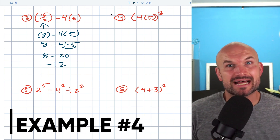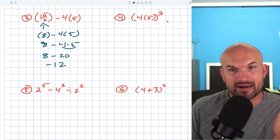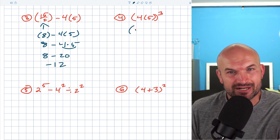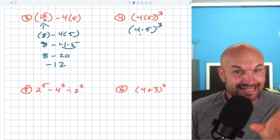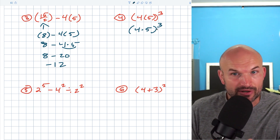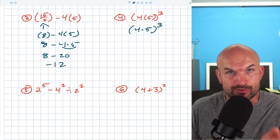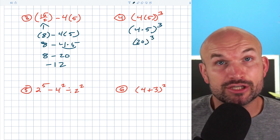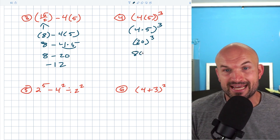In this next example, I have a parenthesis inside of parentheses. Whenever you're working with parentheses, you always want to do the innermost parentheses first. There's really nothing I can do with the five alone, so I can rewrite this as four times five, cubed. I need to simplify whatever's inside my grouping symbol before I do anything with my exponent. So four times five is 20, and 20 cubed — that's 20 times 20 which is 400, times 20 — equals 8,000.